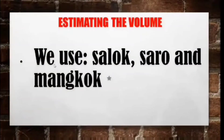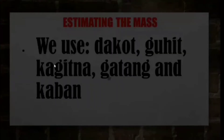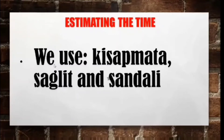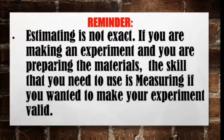For estimating the volume of an object, we can use salok, saro, and mangkok. For mass, we have the dakot, guhit, kagitna, gatang, and kabal. And for estimating time, we can use tafisak mata, saglit, and sandalit. Reminder: estimating is not exact, so if you are making an experiment and preparing materials, the skill you need to use is measuring, not estimating, if you want to get a valid result from your experiment.